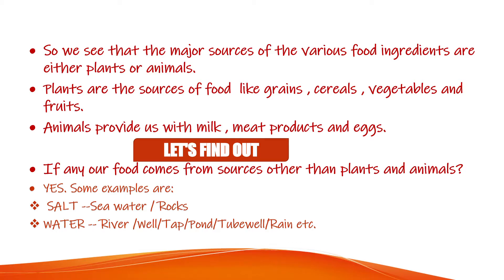We conclude that there are two major sources of food ingredients: plants and animals. Plants are the sources of food like grains, cereals, vegetables, and fruits. Animals provide us with milk, from which we prepare many milk products like ghee and butter. Meat products and eggs are also provided by animals.